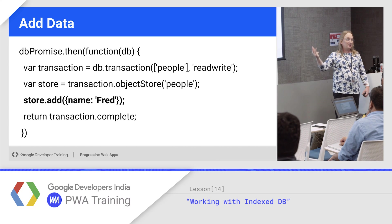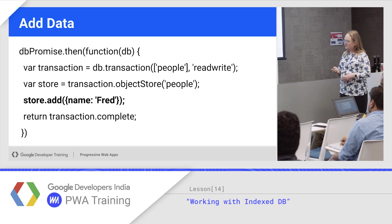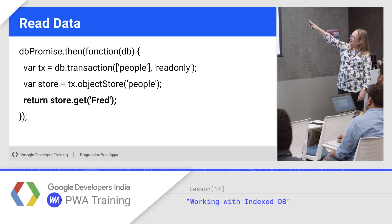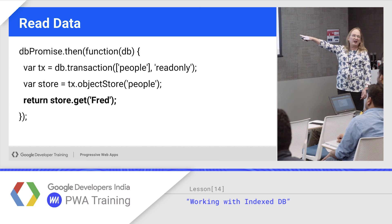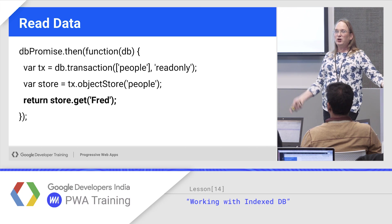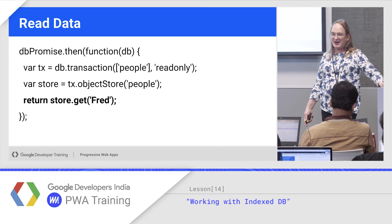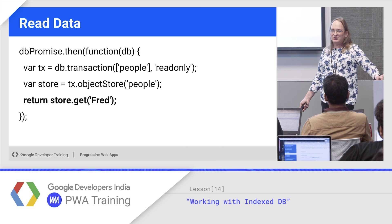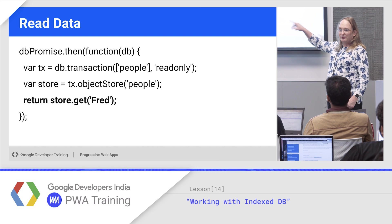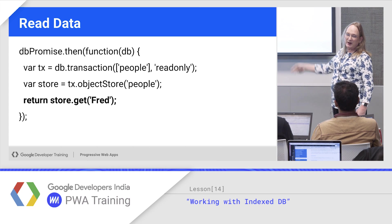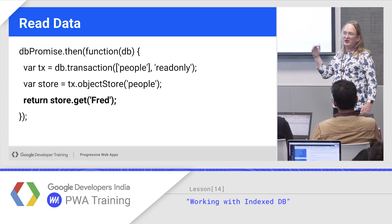To read data, open the transaction, tell it which object store, open the object store, and call get. Notice that for a single read operation, I'm not waiting for the transaction to complete — it's either going to succeed or fail, and it triggers when the transaction does. As soon as it returns, you know the transaction's closed. However, if you had done store.get, made a decision, then done another put, then you'd want to wait for the transaction to complete. For a single get like this, you don't really need to wait.